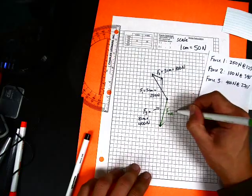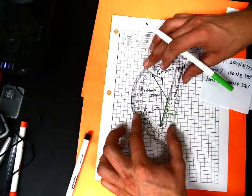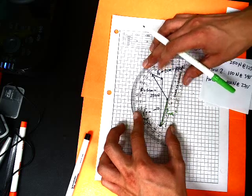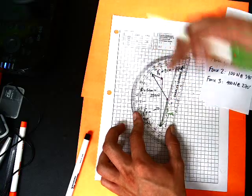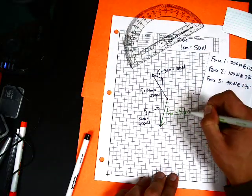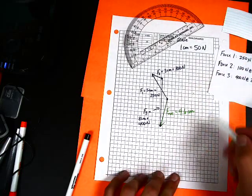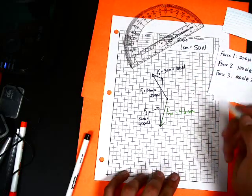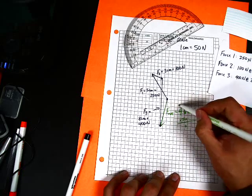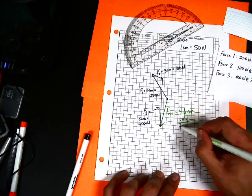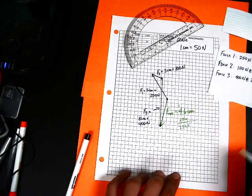And so this net force is, do the same process with measuring the length of it. And I'm getting 4 point, from the center of my dot here, 4.6 centimeters. Again, using our scale, each centimeter equals 50 Newtons. So 4.6 times 50 is going to be 30, carry the 3, and 23. We have an extra zero here, but remember you can put the decimal point right there. So 230.